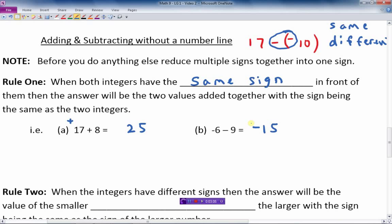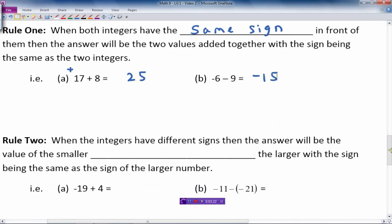And that makes sense, if I go 6 degrees below 0, and the temperature goes 9 degrees lower than that, then I basically get to minus 15 degrees below 0. So practically speaking, it makes sense. Rule number 2, let's move right on to rule number 2 here.